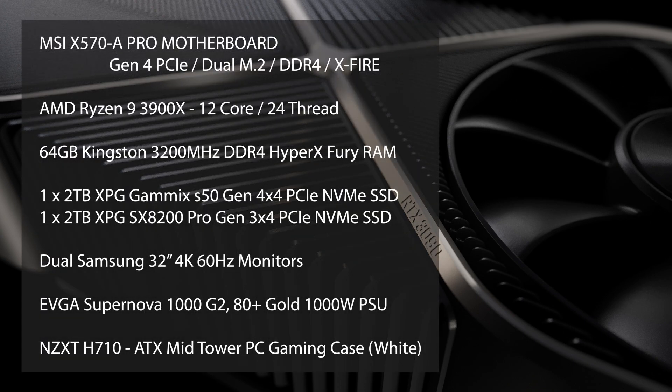Let's have a look at the specifications of the PC that all three of these cards were tested on. You can have a look at that here in the background. This system was built for the NVIDIA 3000 series when I heard it was being announced, and the only real weak point is the Ryzen 9 3900X, which was the best one available at the time.